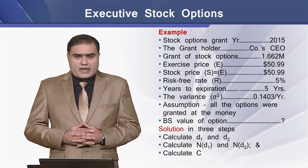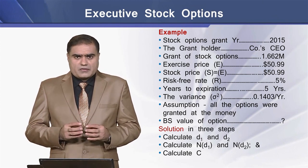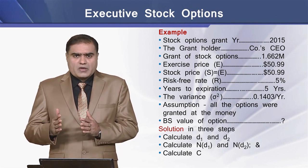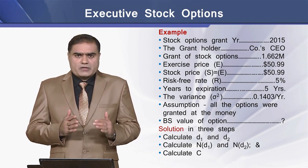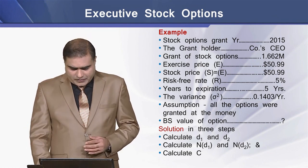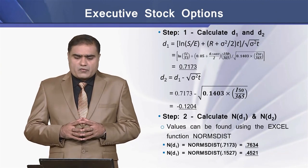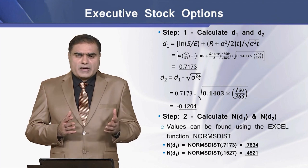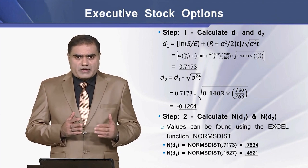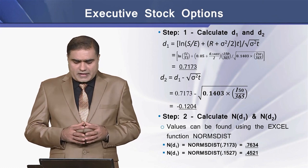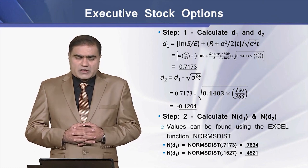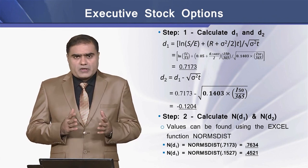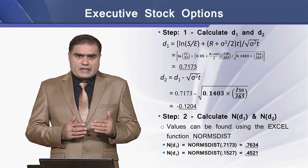We can calculate the value of this call option to the executive using the Black-Scholes model, which works in three steps. In step 1, we need to calculate the value of D1 and D2. Putting values into these two models, we get a value of 0.7173 for D1 and 0.1204 for D2.